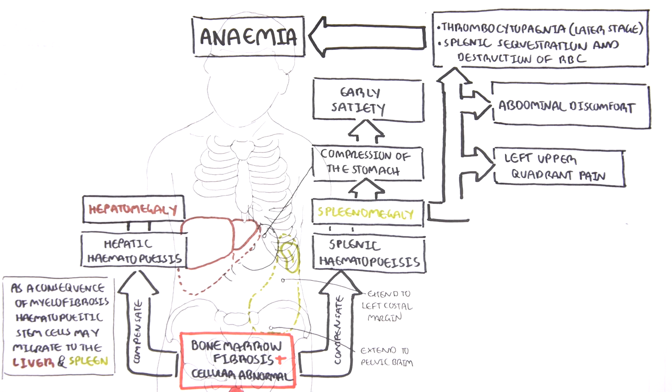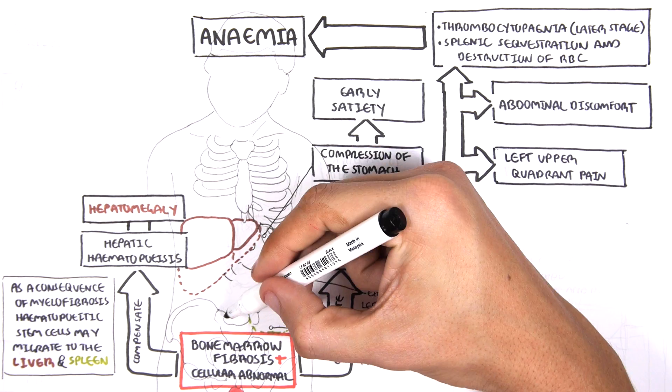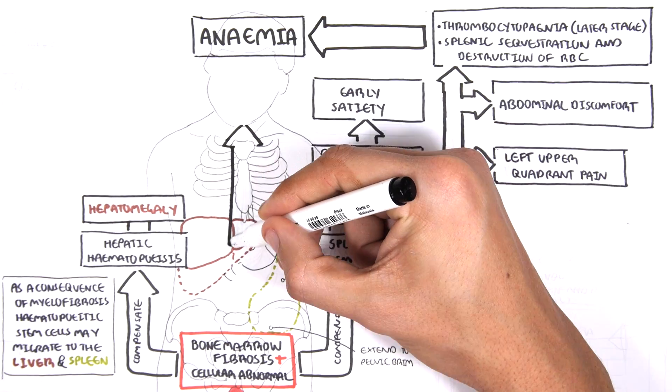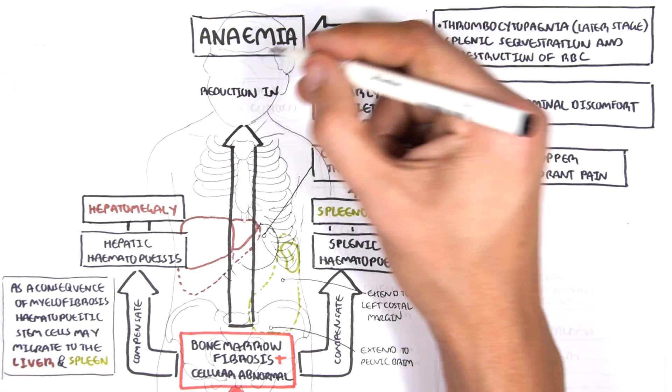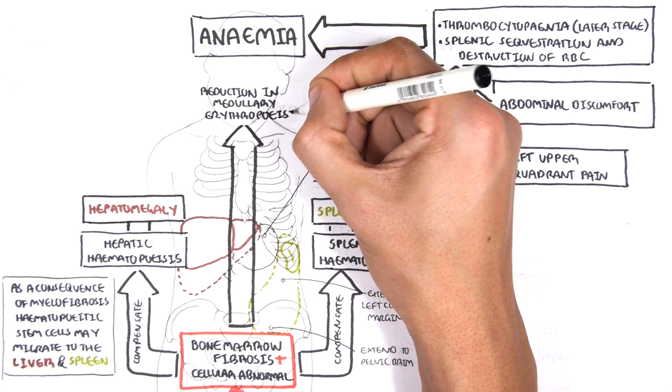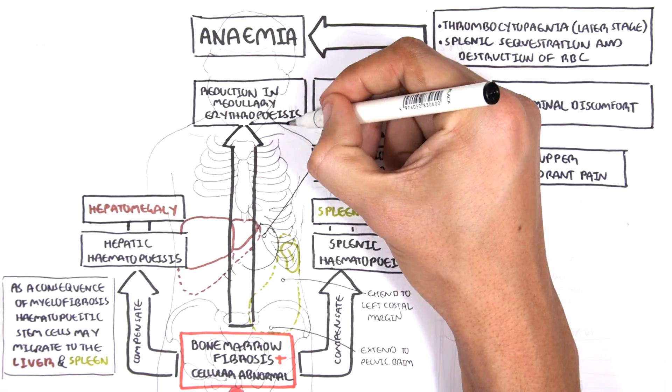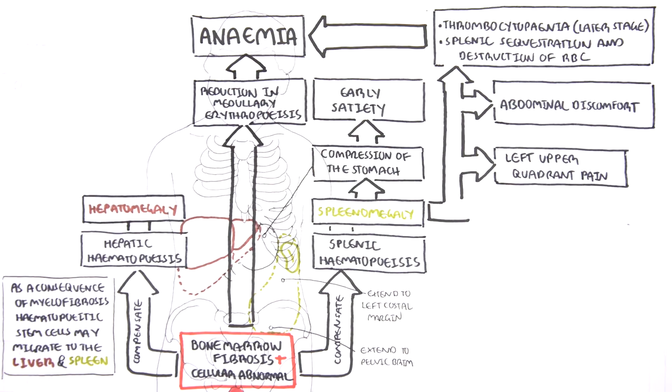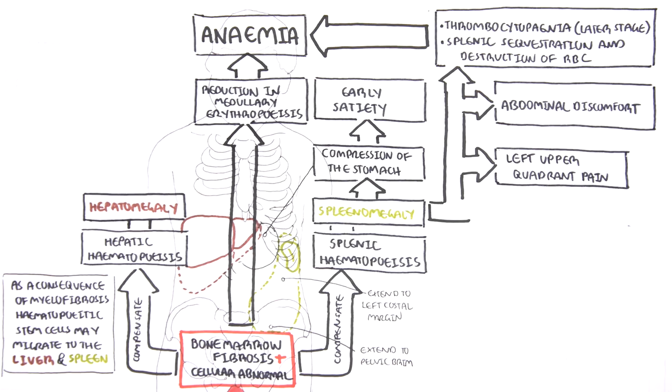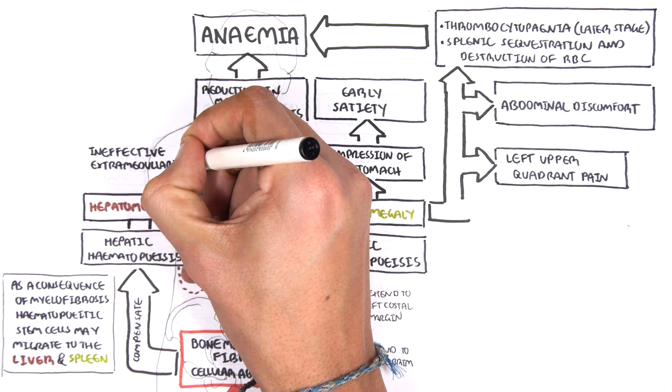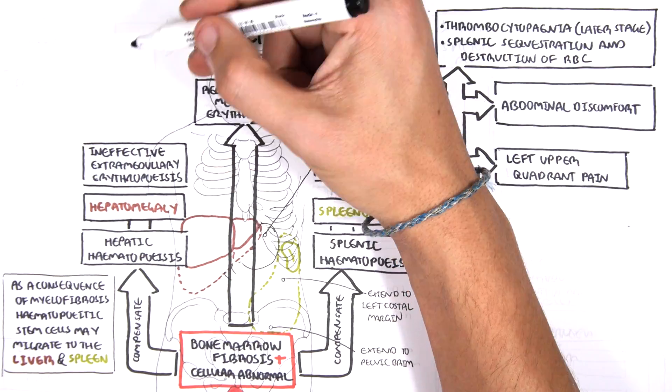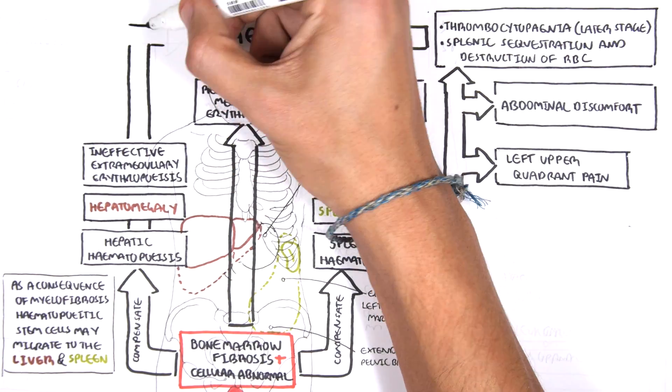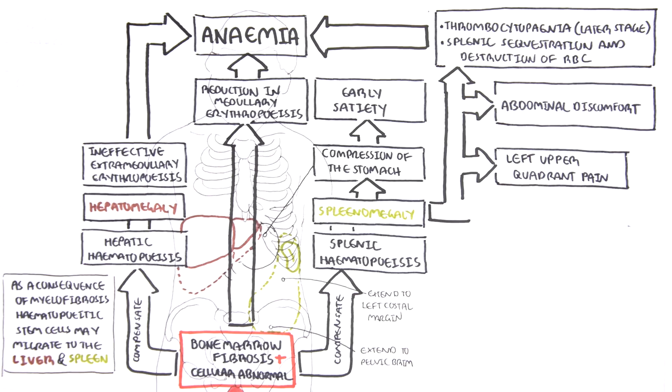But there are actually many other causes of anemia in myelofibrosis. For example, the bone marrow fibrosis and cellular abnormality can lead to reduction in medullary erythropoiesis, which can contribute to anemia. Further, the extramedullary hematopoiesis can be ineffective and not produce enough red blood cells, and this will subsequently contribute to anemia.